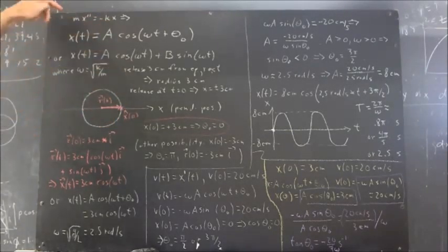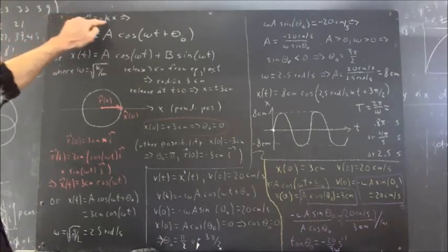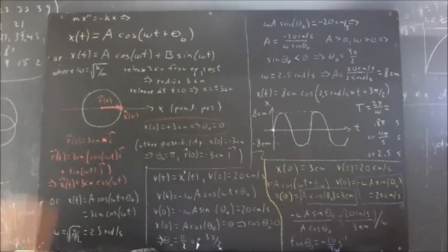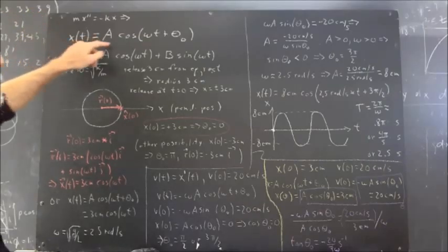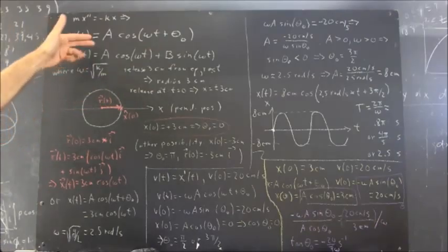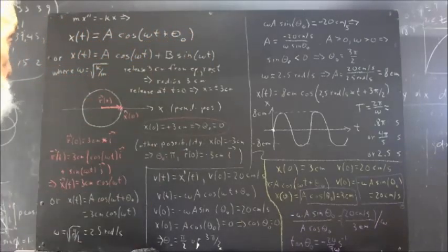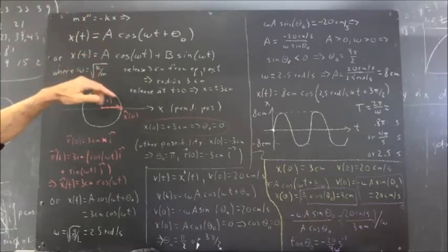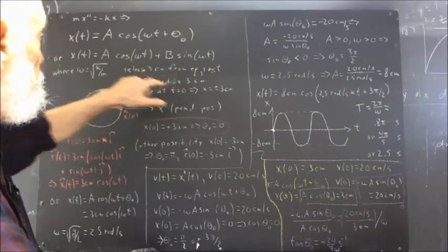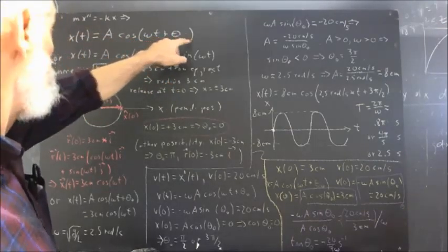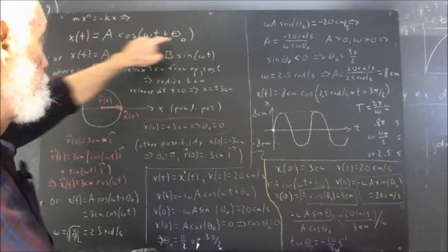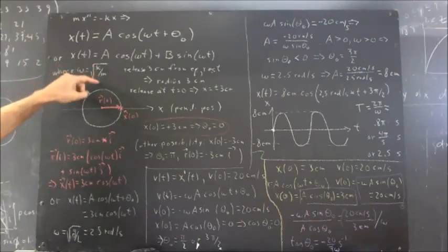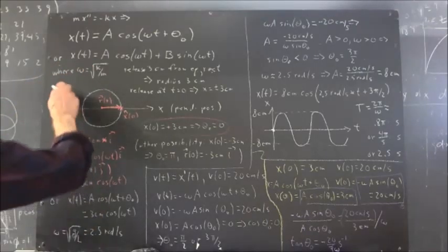We recall from the preceding class that the solution to mx'' = -kx, which represents net force equal to -kx, a linear restoring force. The solution can be expressed as x(t) = A cos(ωt + θ₀), or as A cos(ωt) + B sin(ωt). The A in the first form is not the same as the A in the second. If you combine A and B, you get the values of A and θ₀ in the first form, and vice versa. In this case, omega is the square root of k over m.